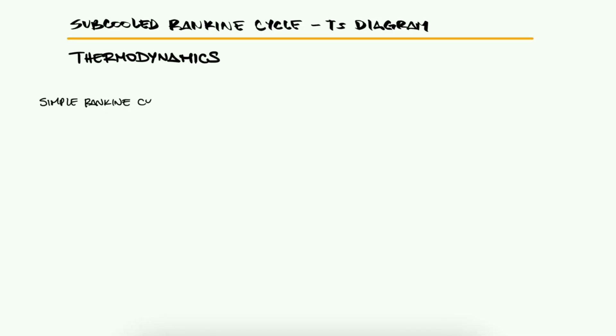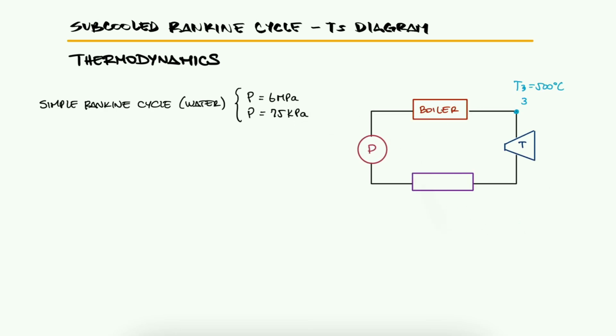A simple water-based Rankine cycle operates between 6 MPa and 75 kPa. The temperature at the turbine entrance is 500 degrees Celsius.